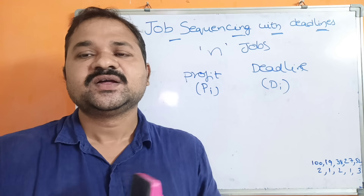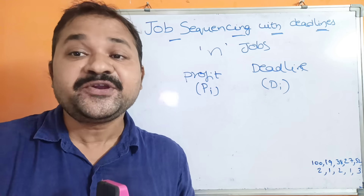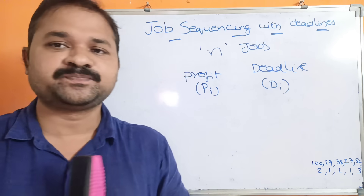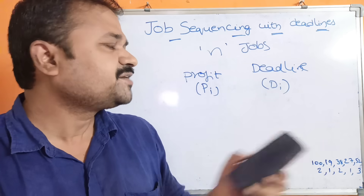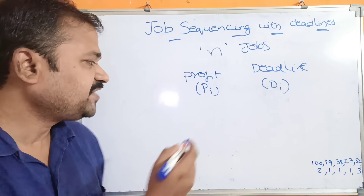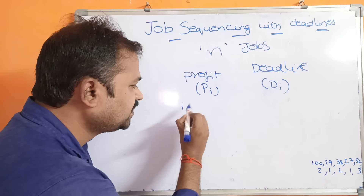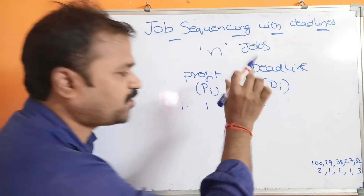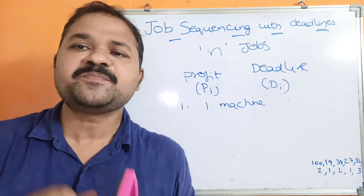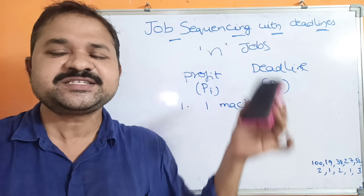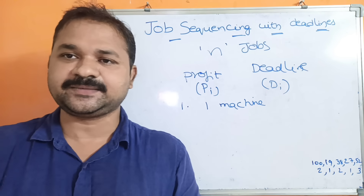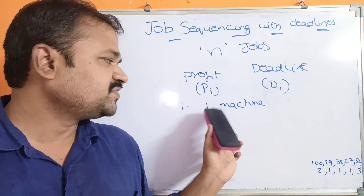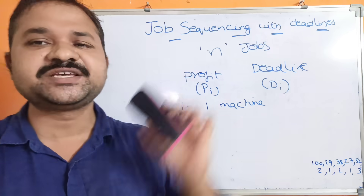We can earn profit if and only if we complete the job by its deadline. To complete job execution, we have two constraints. First, we have only one machine to execute all these jobs. If there were multiple machines, they could execute multiple jobs simultaneously, but here we have only one machine.